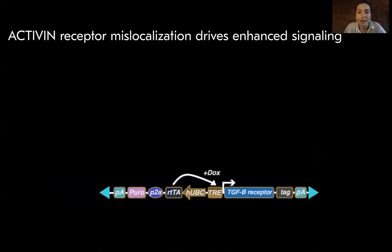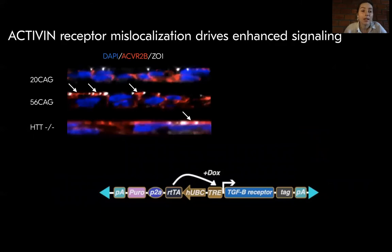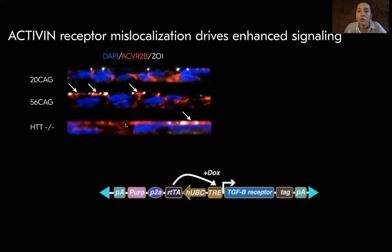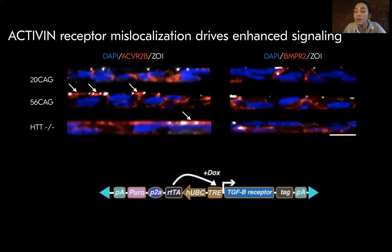To address this, we assessed TGF-beta receptor expression and localization using an overexpression system. Activin receptors are solely localized to the basolateral side in 20 CAG; however, this is impaired in 56 CAG, showing apically mislocalized activin receptors, which is even more abundant in the knockout. Consistent with our other data, this does not affect the BMP receptors — these are solely localized to the basolateral side in all three genotypes.